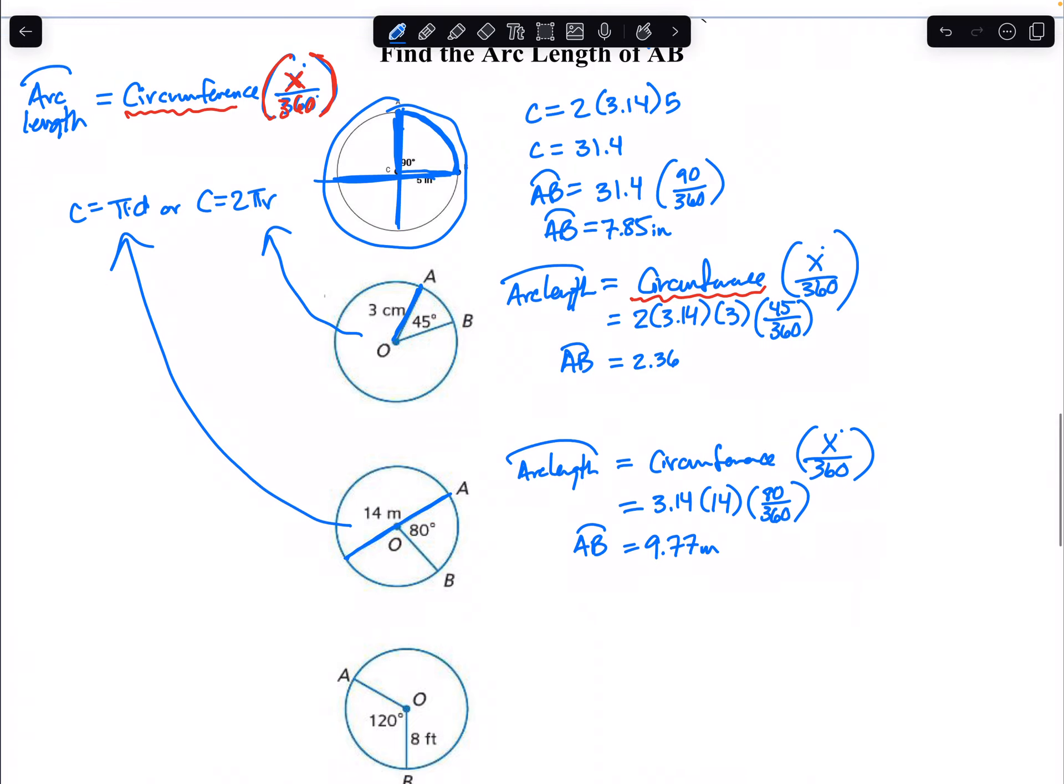This will never be an angle. Because we're dealing with length, as opposed to the degrees as the previous examples we were doing is the measure of the arc. This is the length of an arc. Those are two different statements. M representing degrees, and length representing distance.